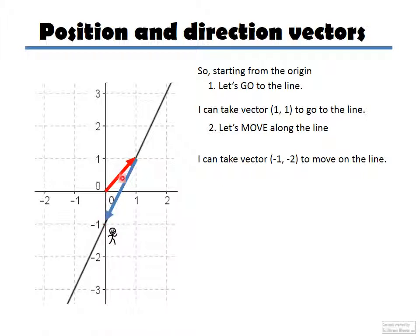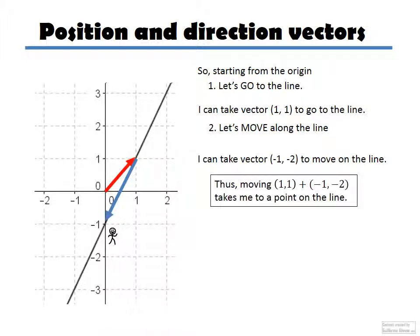If I take this vector now, and then I take this vector here, I get to this point, and this point is on the line. Now, moving (1, 1), and then (-1, -2) takes me to a point in the line.